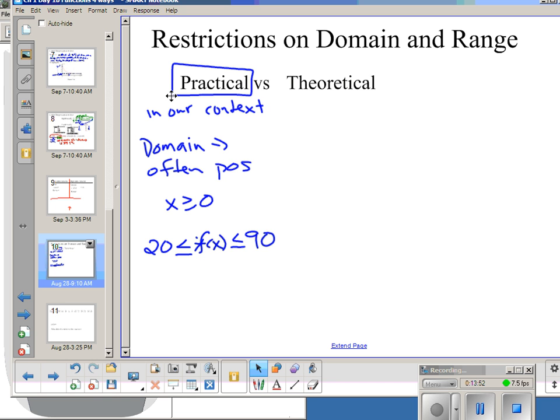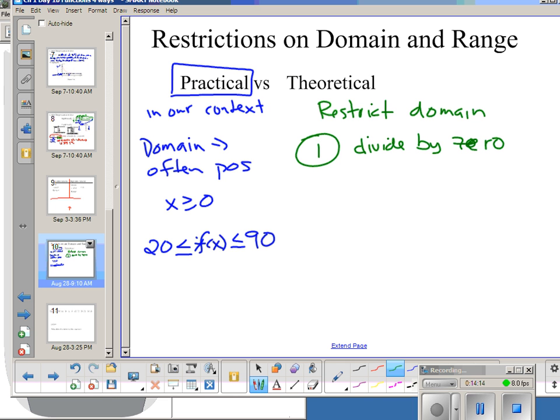Now, theoretical domain and range is based on just the equation or the graph. And there's two things that will restrict our domain theoretically. The number one thing we cannot do mathematically, so when you're trying to figure out what your domain is, is you cannot divide by zero. So, you're looking for values of x that would make you divide by zero. For example, if f of x is 1 over x, then for my domain, I would say all x's such that x could not equal zero, because that would make me divide by zero.